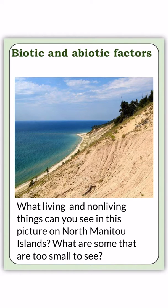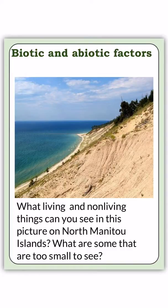When we're talking about the environment, it can be broken up into abiotic and biotic factors. Abiotic factors are your non-living, physical aspects of the environment. Examples include sunlight, soil, temperature, wind, water, and air. Biotic factors are your living components in that environment.